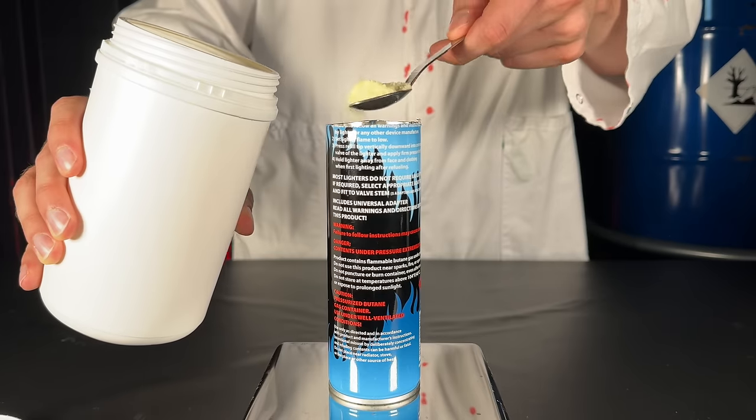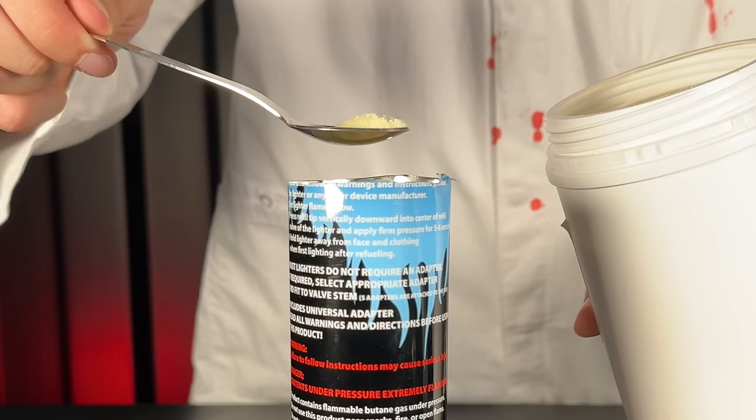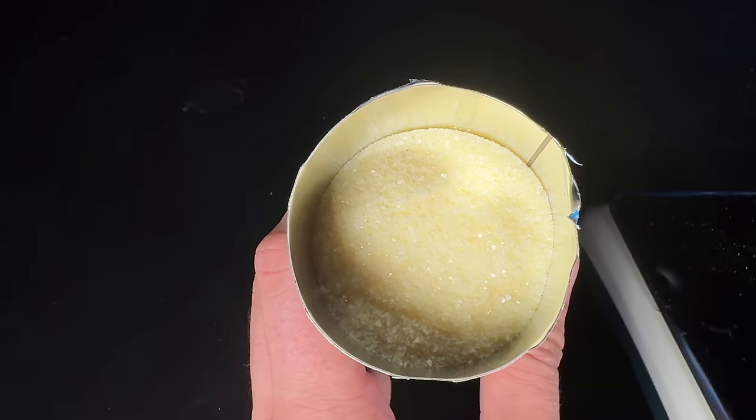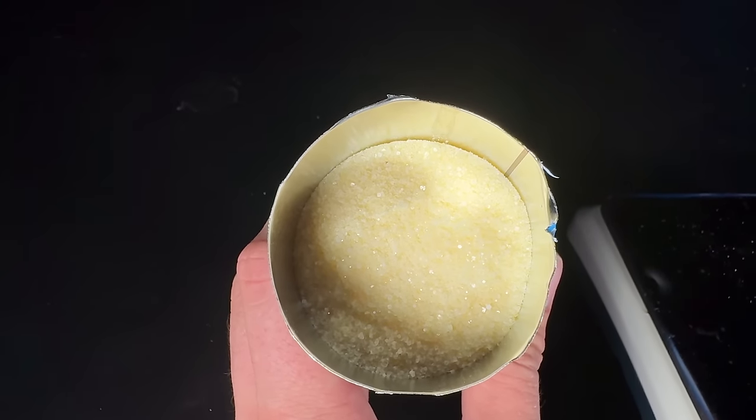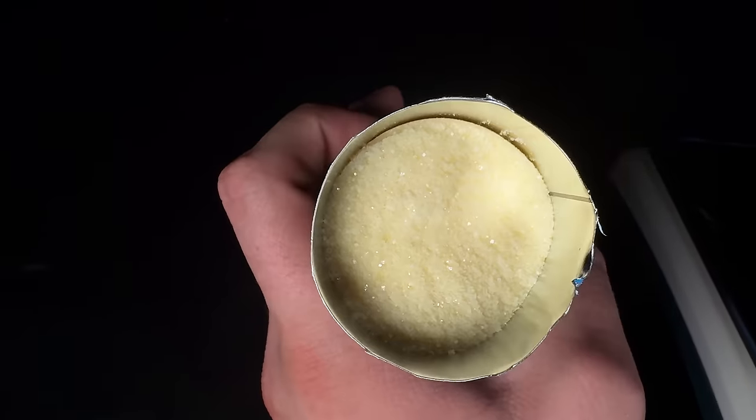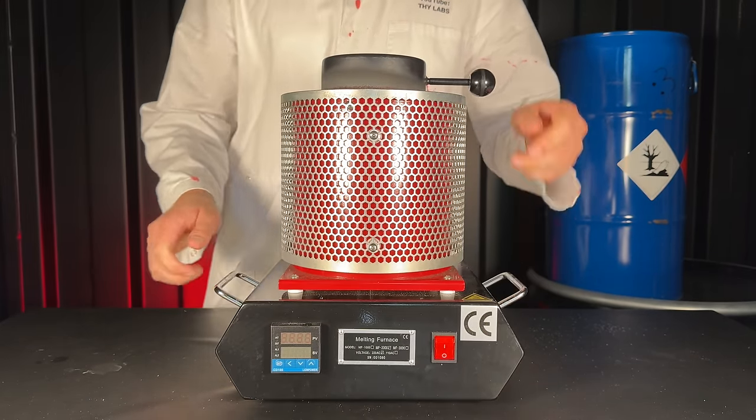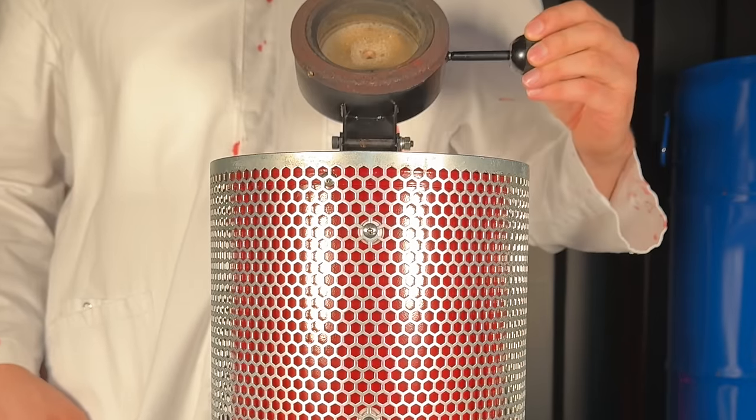I found that the best type of container for this reaction is a butane bottle made from iron. The container is going to get destroyed during the process, and to me it is therefore important that besides being chemically resistant, it is cheap. I weighed out 250 grams of potassium ferrocyanide trihydrate, which should be more than enough.